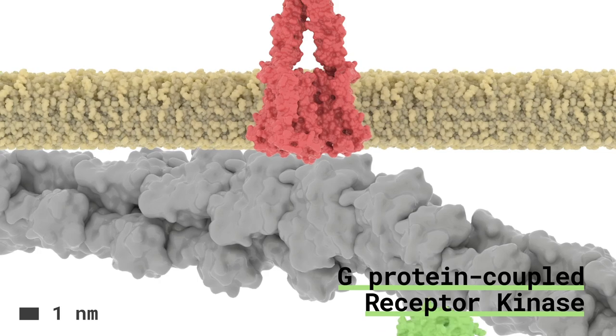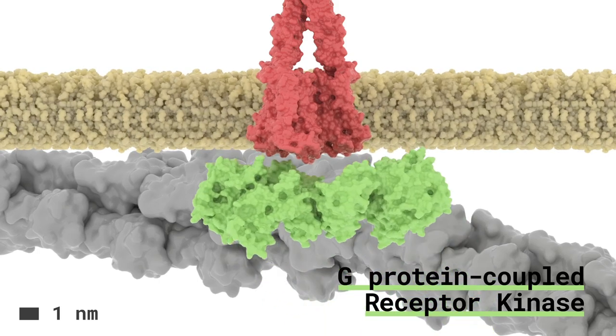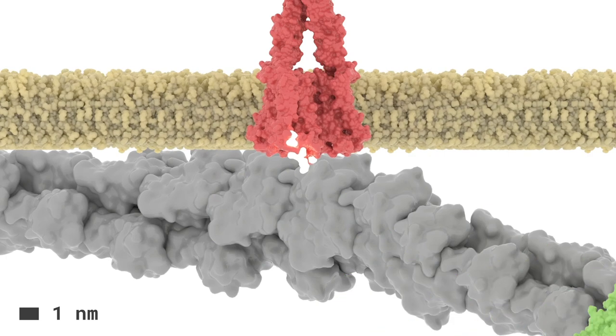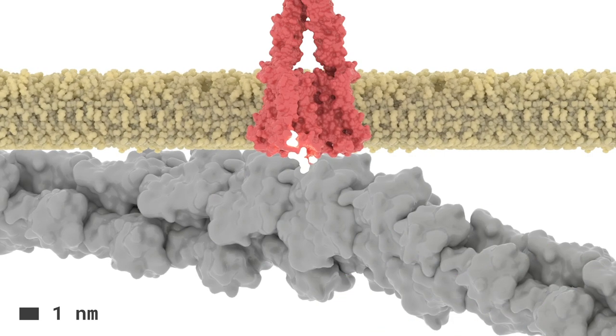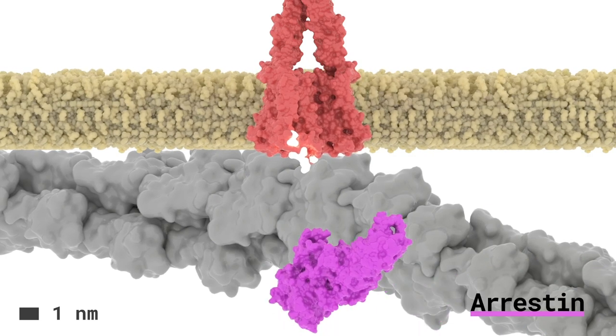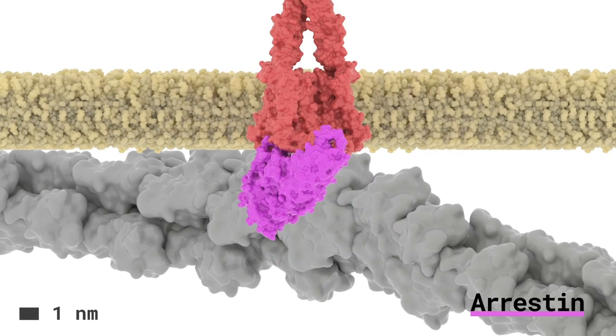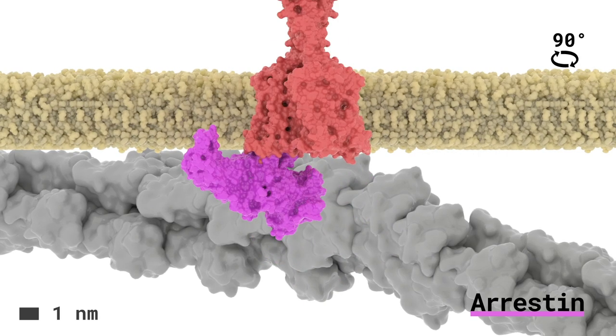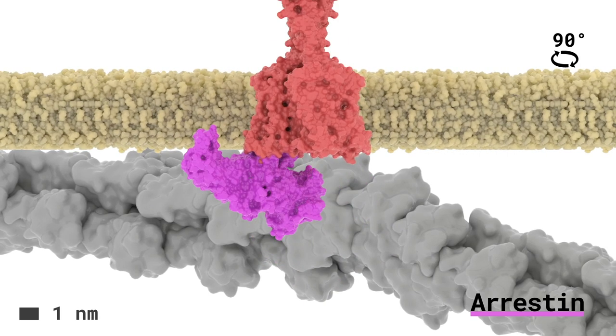Still within the actin-cytoskeletal fences, the C-terminus of the GPCR becomes phosphorylated by G-protein-coupled receptor kinases. C-terminal phosphorylation acts as a signal for the recruitment of arrestin to the metabotropic glutamate receptor.